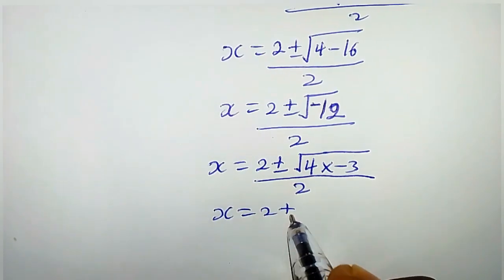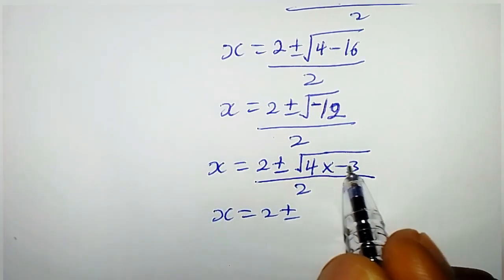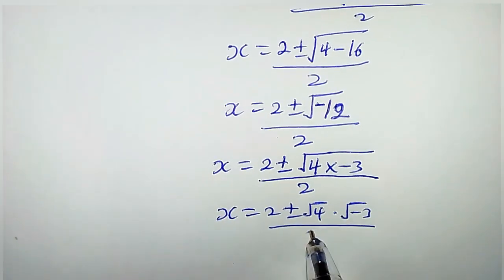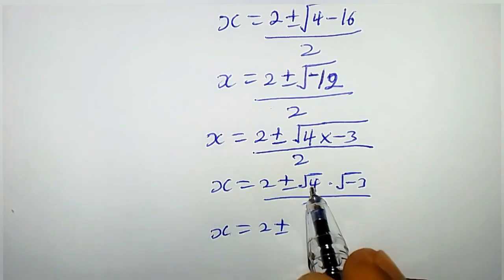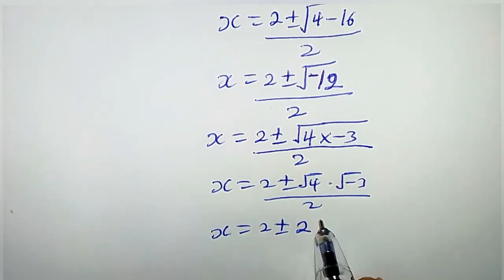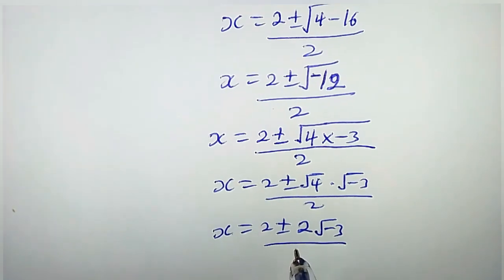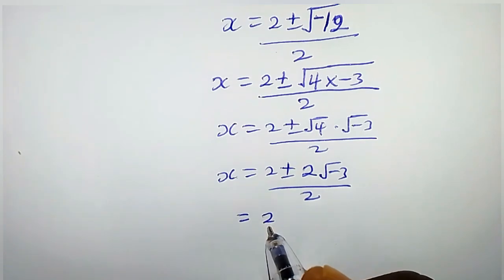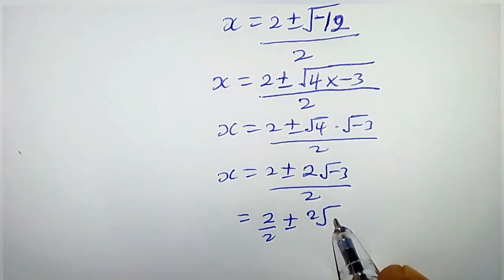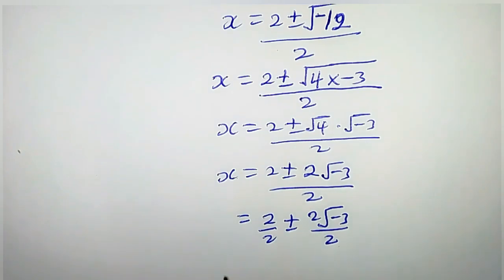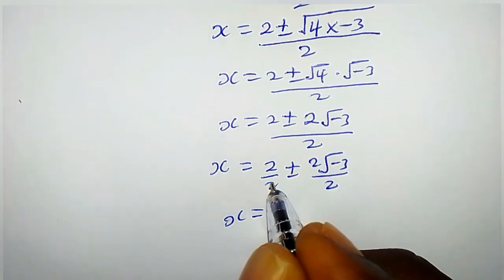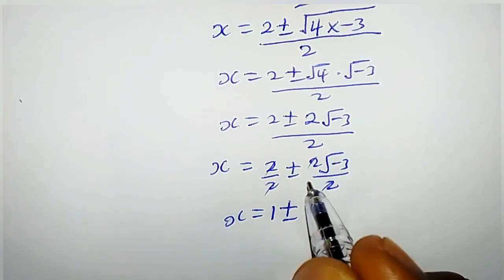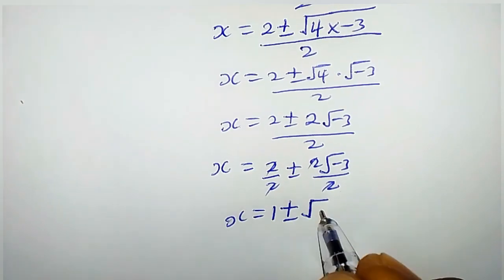So x equals 2 plus or minus the square root of negative 12, over 2. We can rewrite this as 2 over 2, plus or minus 2 times the square root of negative 3, over 2. Dividing through by 2, we get x equals 1 plus or minus the square root of negative 3.